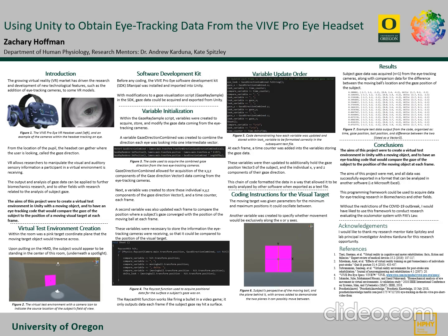The variables were then updated to hold more data in the form of the gaze position Vector3 of the subject and the individual XYZ components of the gaze direction and the ball location. Each of these was comma separated and each frame a new line would be made so that the data was all formatted in a format that could be read by another software.